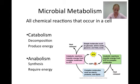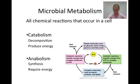The ATP created in catabolic reactions is used to fuel the energy-requiring anabolic reactions. Continuing clockwise on the diagram from the purple box back down to the blue box, we see that glucose, amino acids, glycerol, and fatty acids are combined to make up starch, proteins, and lipids in anabolic reactions. Because anabolism is an energy-requiring process, ATP is broken down into ADP and inorganic phosphate as anabolic reactions occur.